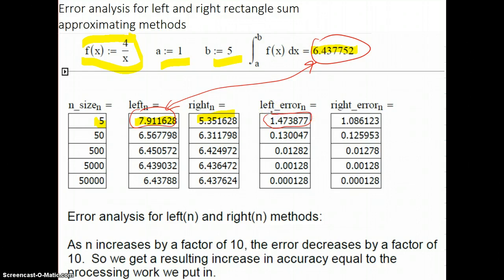So that's the error difference between the left approximating method when you're using 5 subintervals. That's your error. And the right, similarly, the right rectangle sum error is this.